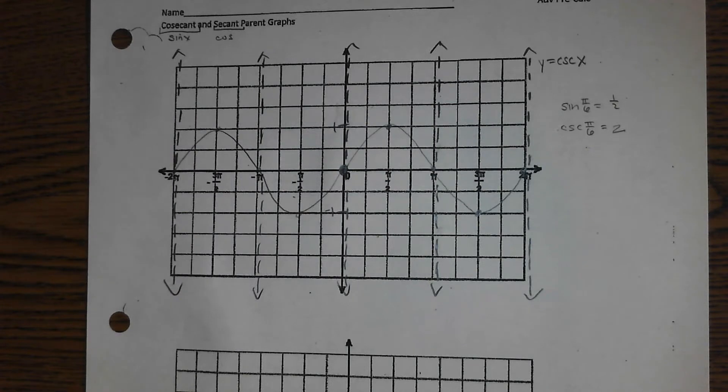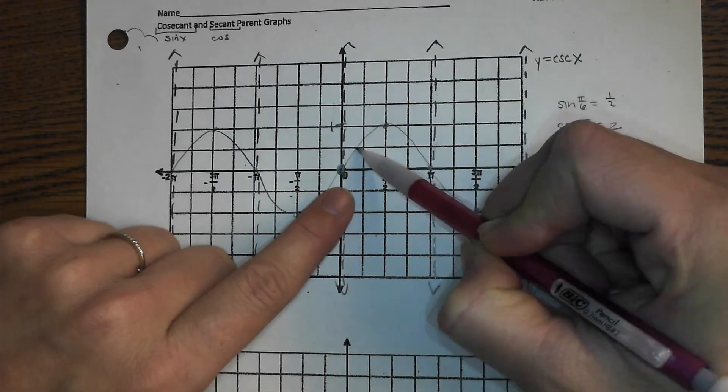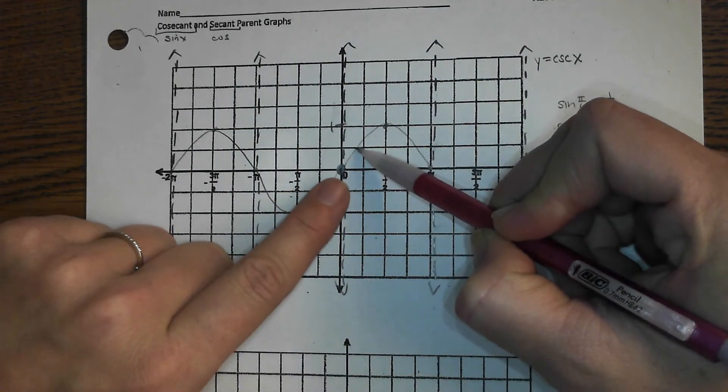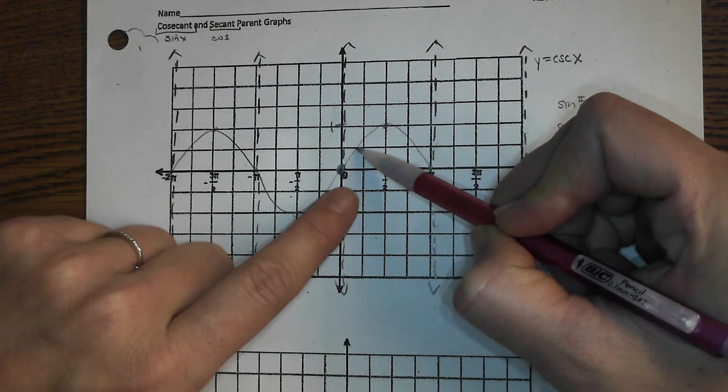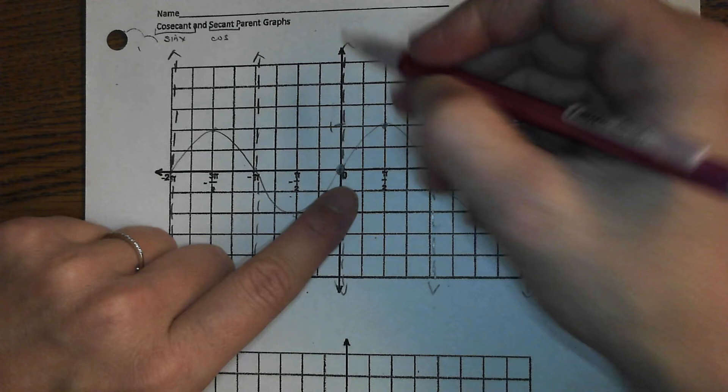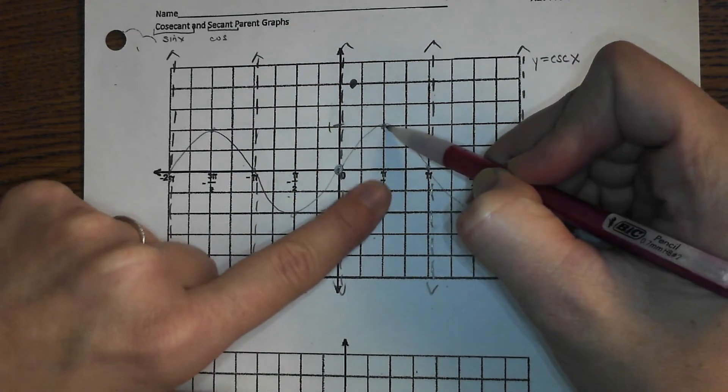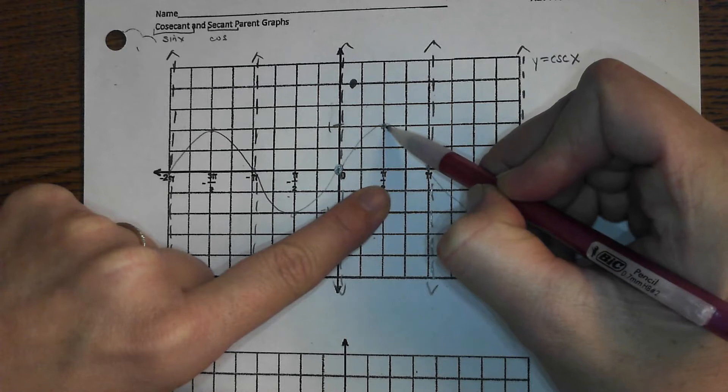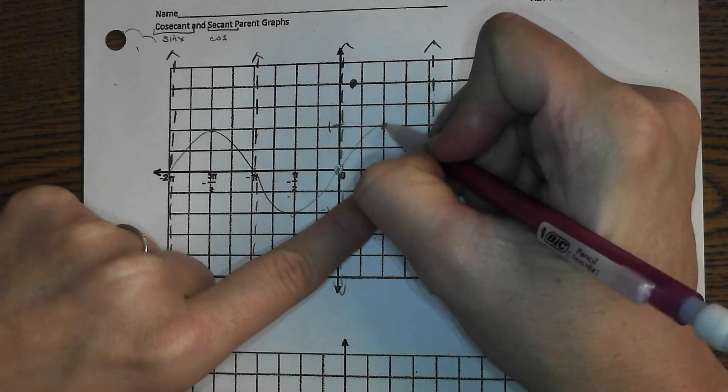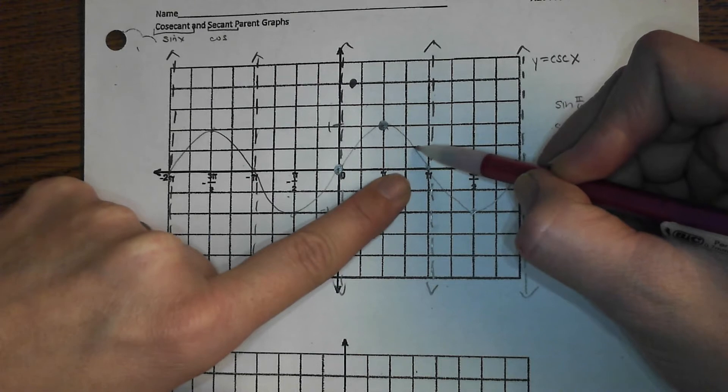Okay. So all those numbers are pretty easy to reciprocate. So if we go through here, let's take this point, which is at a half. What's a half reciprocated? The y-coordinate is a half. We said a half reciprocated is 2. What's 1 reciprocated? Still 1. If we go over here, we have a half again. Reciprocated would be 2 again.